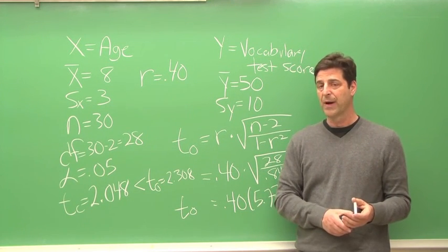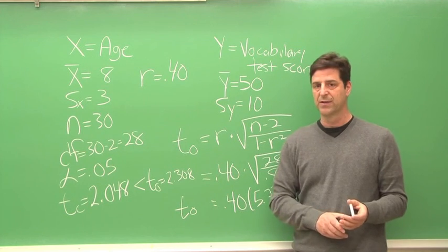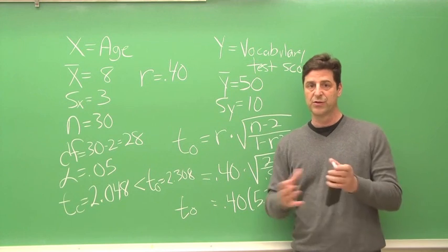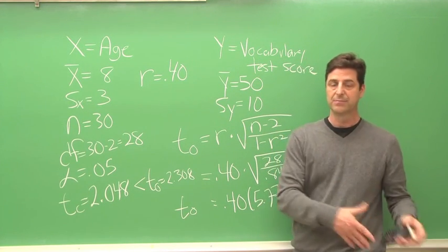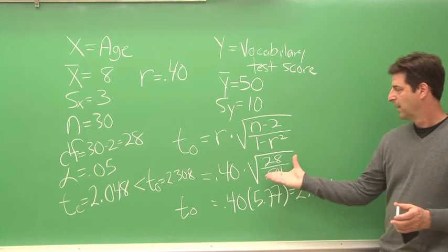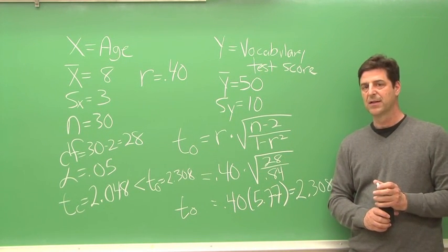And the population would be whatever population our sample represents. So if it is children of a certain age, that's our population. If it's children of a certain age from a certain place, that's our population. So that is how you determine whether a correlation coefficient is statistically significant.